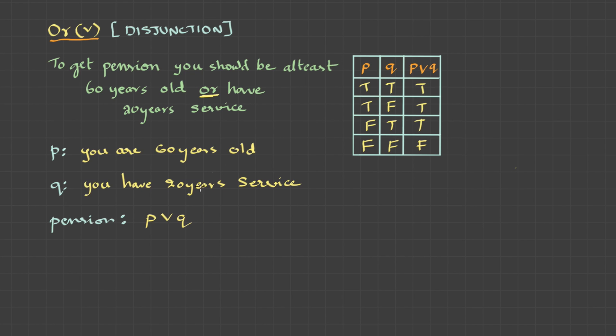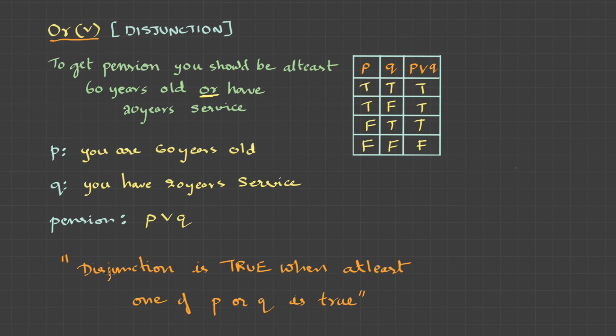We can memorize this as: disjunction is true when at least one of P or Q is true, and it's false only when both of them are false.